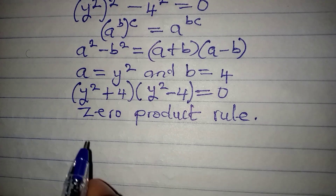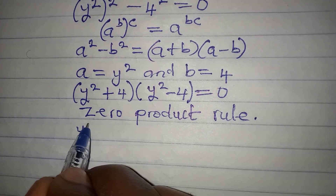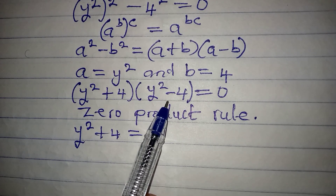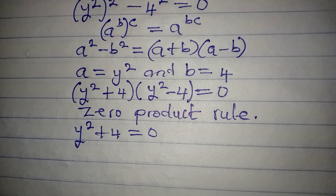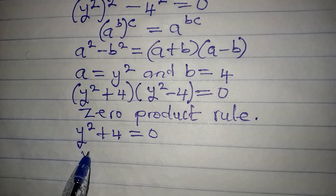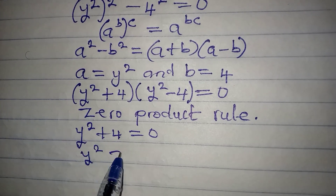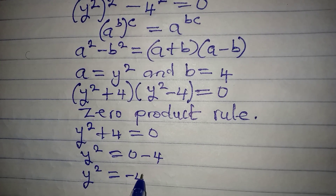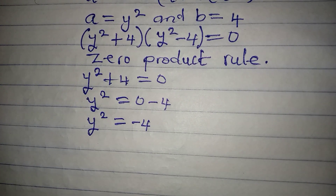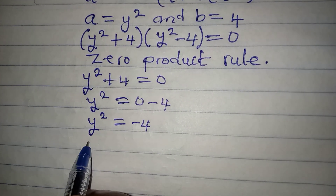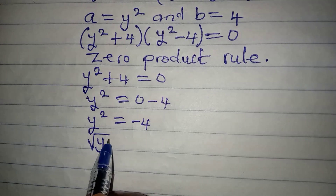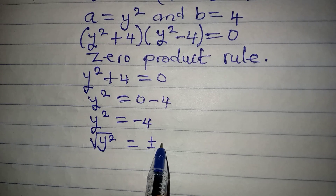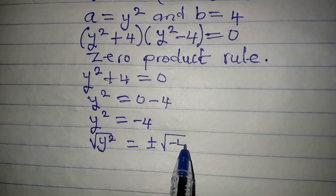This will mean that y squared plus 4 is equal to 0, or y squared minus 4 is equal to 0. From the first bracket, y squared will be equal to 0 minus 4, so y squared is equal to minus 4. To get y, I have to take the square root of both sides. Square root of y squared will be equal to positive or negative square root of negative 4.